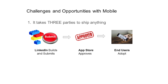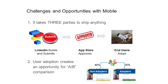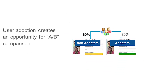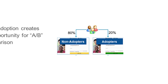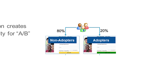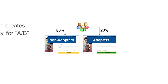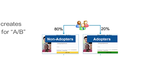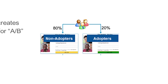Such user adoption also creates an opportunity for a quasi-A-B comparison, because at any given time we will have users who are the non-adopters on the older app version and the adopters who are on the new app version. The challenge is that it's not fully randomized.